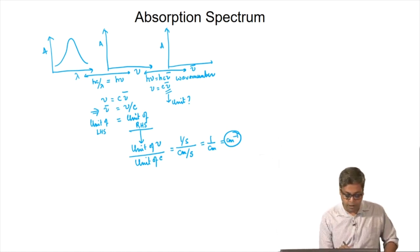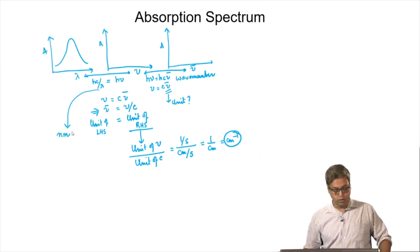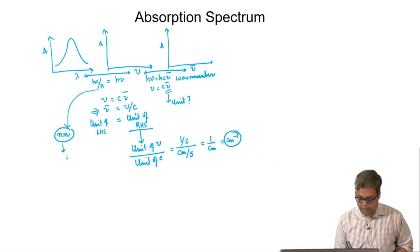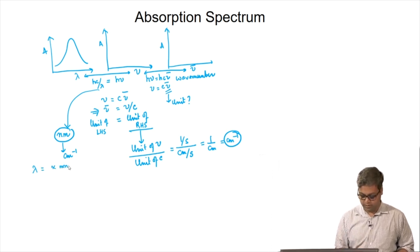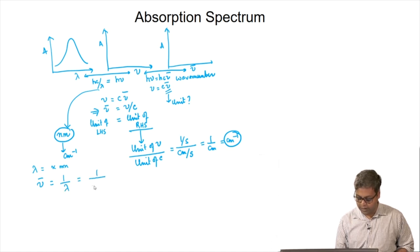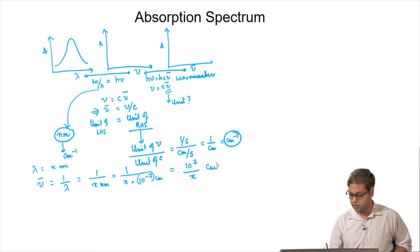Lambda is normally represented in nanometers. Let us look at the relation between nanometer and centimeter inverse. If the wavelength lambda equals x nanometer, then in centimeter inverse the wave number will be 1 by lambda, that is 1 by x nanometer, which is 1 by 10 to the power minus 7 centimeter, equals 10 to the power 7 by x centimeter inverse.